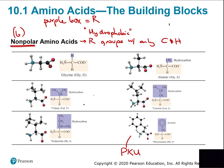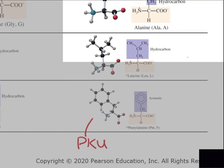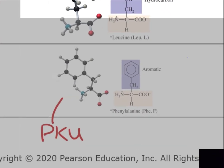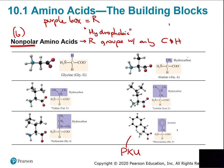Phenylalanine is an aromatic non-polar amino acid with a six-membered ring and a circle inside. This is the amino acid that builds up in PKU — phenylketonuria. If you're born missing the enzyme to break down phenylalanine, it accumulates and causes neurological changes, inhibiting normal brain structure development and leading to permanent intellectual disability. That's why they test for PKU at birth and put babies with PKU on a low-phenylalanine diet.